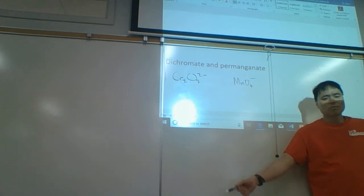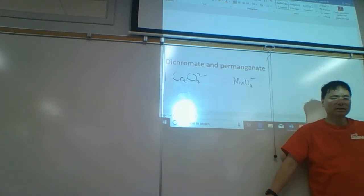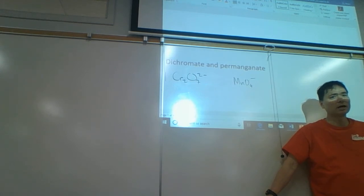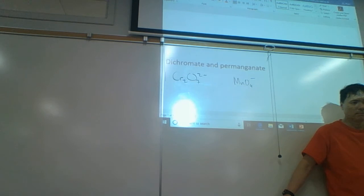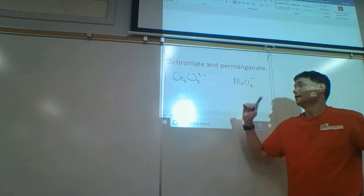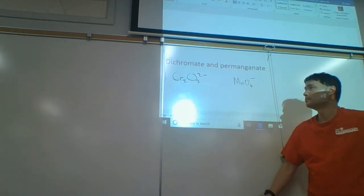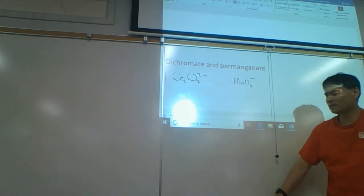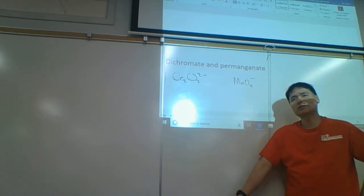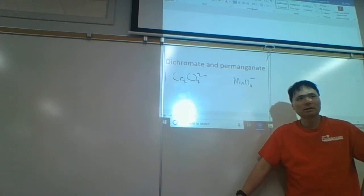What makes dichromate an oxidizer? When we analyze something like this, one of the things we look at is the oxidation state or oxidation number. When we're thinking about oxidation and reduction, we think about the oxidation state. That's something you need to review — do you remember how to do oxidation states?